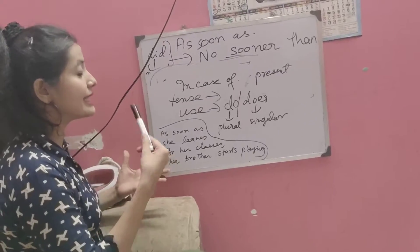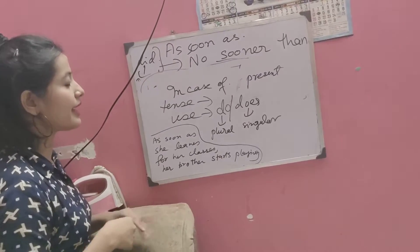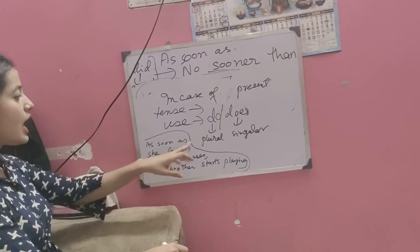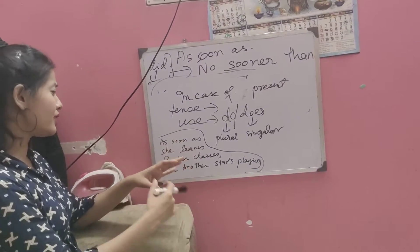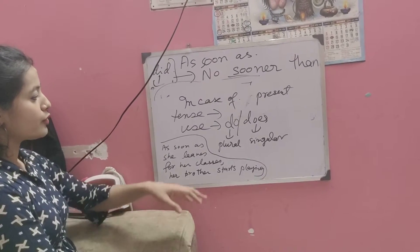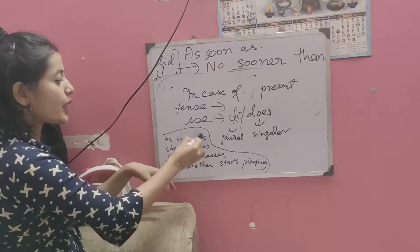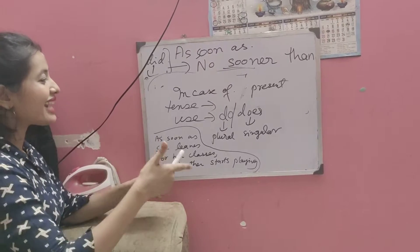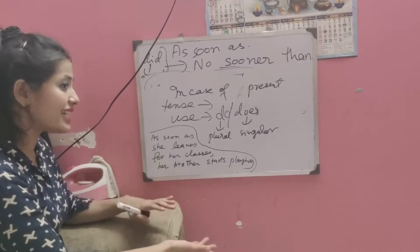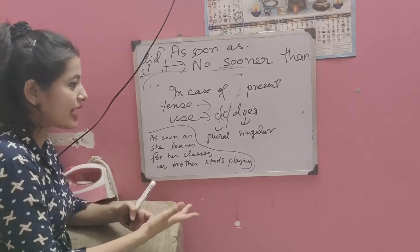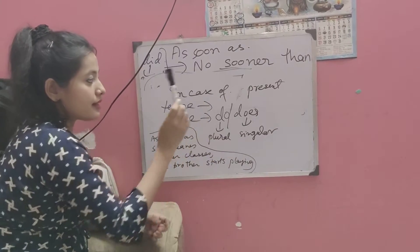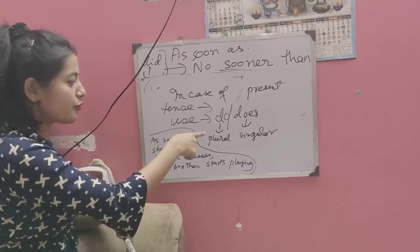Now, in case of present tenses, like sentences which are in present tense, for example, let's take this example: 'As soon as she leaves for her classes, her brother starts playing.' So this is in the present tense. In that case, we cannot use 'no sooner did' or 'no sooner had'. In those cases, we would be using 'do' or 'does', because 'did' is the past tense of 'do'.